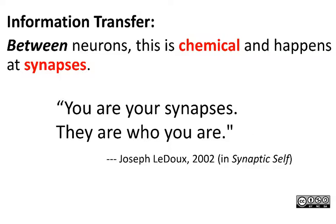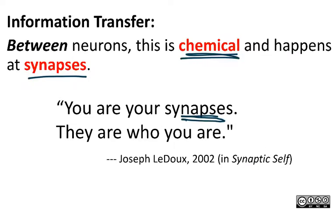Now let's get into more detail about how information transfer between neurons happens. It's in the form of packets of chemicals which we call neurotransmitters, and it happens at specialized areas between two neurons — or between a motor neuron and a muscle cell — referred to as a synapse. The quote 'you are your synapses, they are who you are' is really telling. When you learn something new, you are altering the structure of your brain on the level of the synapse. The synaptic structure of your nervous system is the sum total of all of your experiences and everything you've learned.